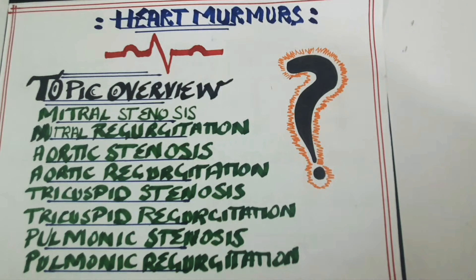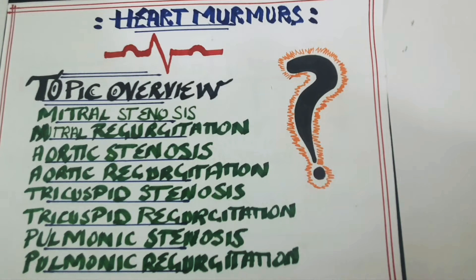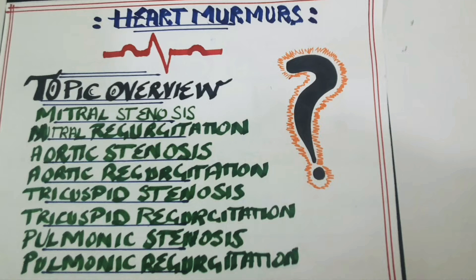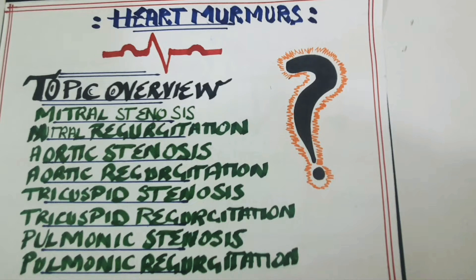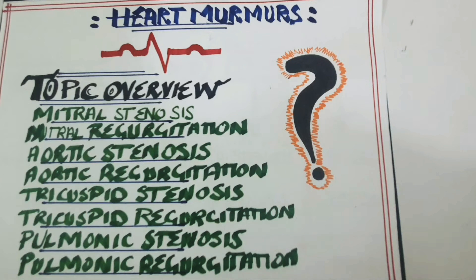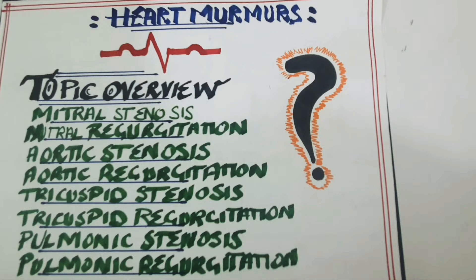Hello friends, today we will discuss the topic of cardiac murmurs. Cardiac murmurs are basically the abnormal sounds produced when the turbulent flow of blood hits against the valves of the heart. Those valves may be the mitral valve, aortic valve, tricuspid valve, or the pulmonic valve.